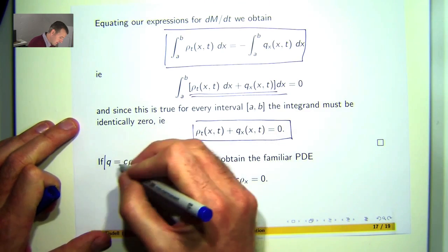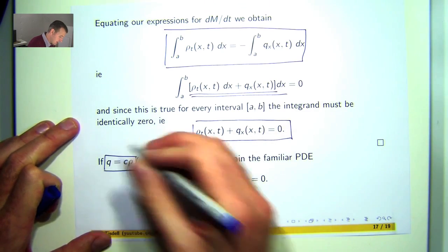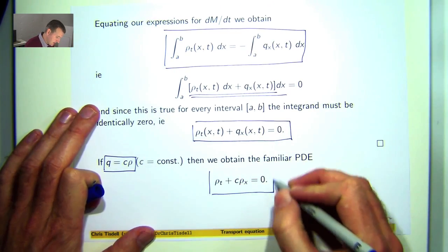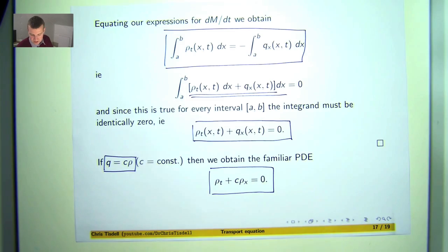And in particular, if q is a constant times rho, then we get the transport equation.